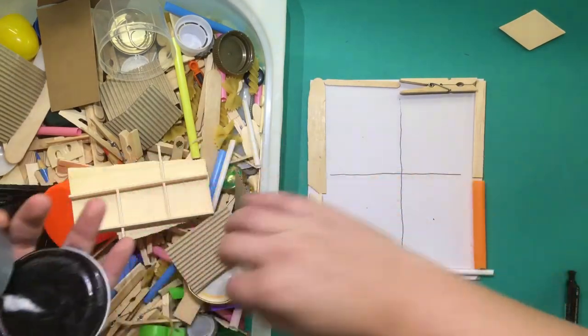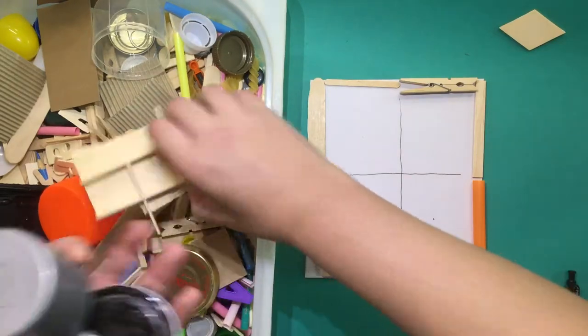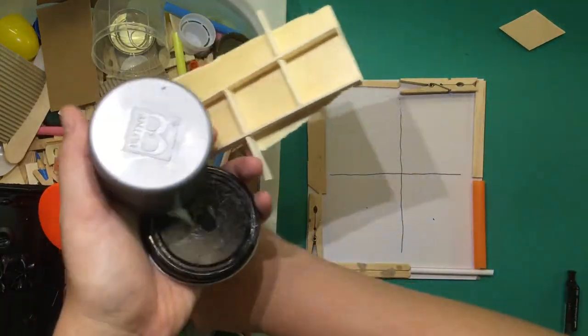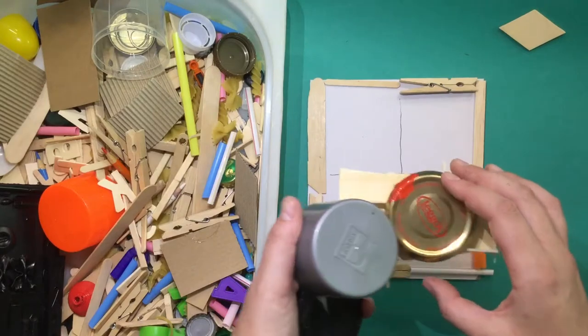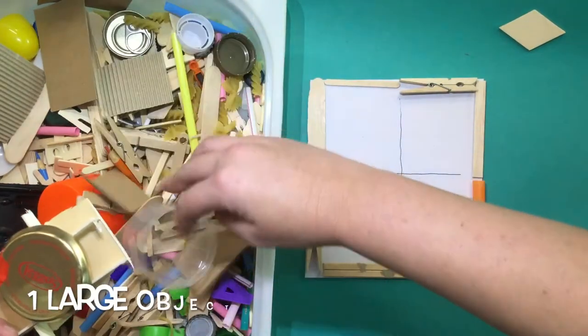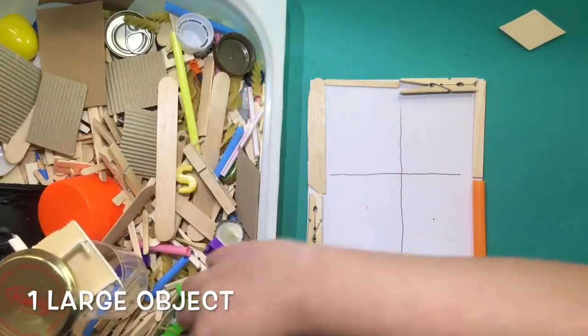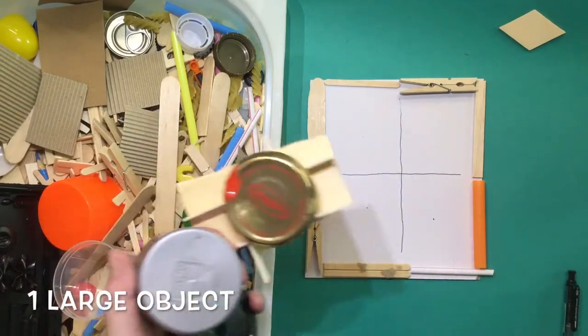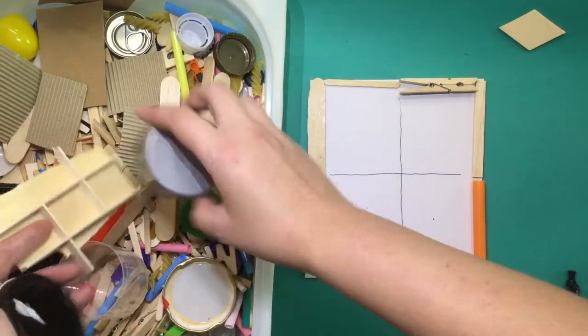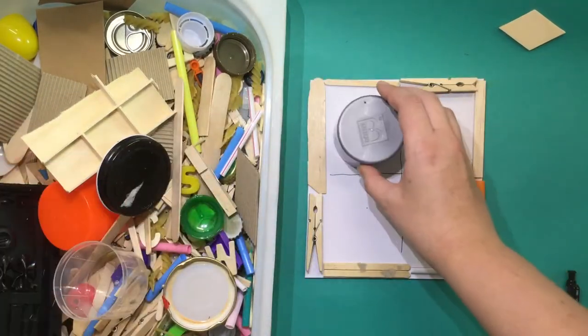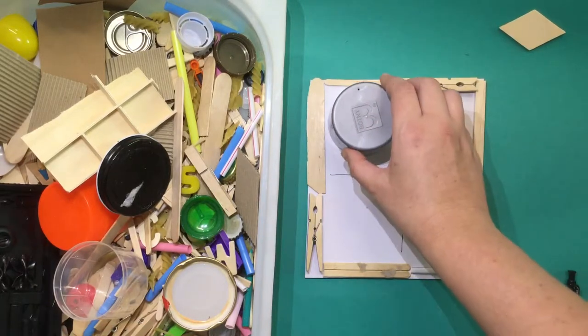These are examples of some of the larger objects that you can find in your material box. We are only using one of these things. Everyone is limited to one large object. I think I will take this and put it in one of the boxes.